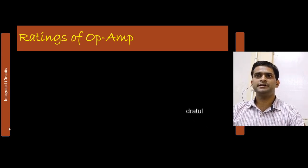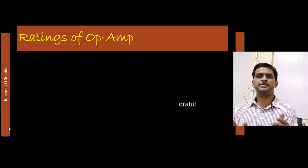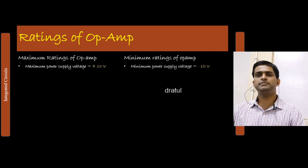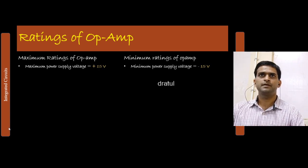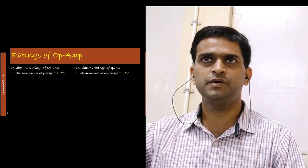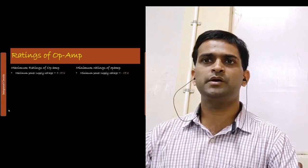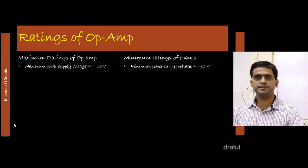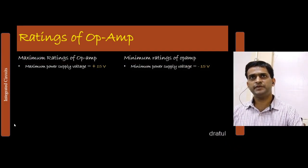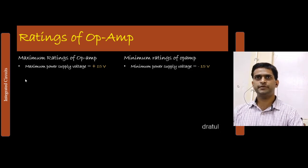I will take the two kinds of ratings simultaneously. Maximum ratings of the op-amp and minimum ratings of the op-amp. The maximum power supply voltage that can be applied to operational amplifier is plus 15 volt, and minimum power supply voltage that can be applied to operational amplifier is minus 15 volt. Maximum differential input voltage is minus 15 volt.